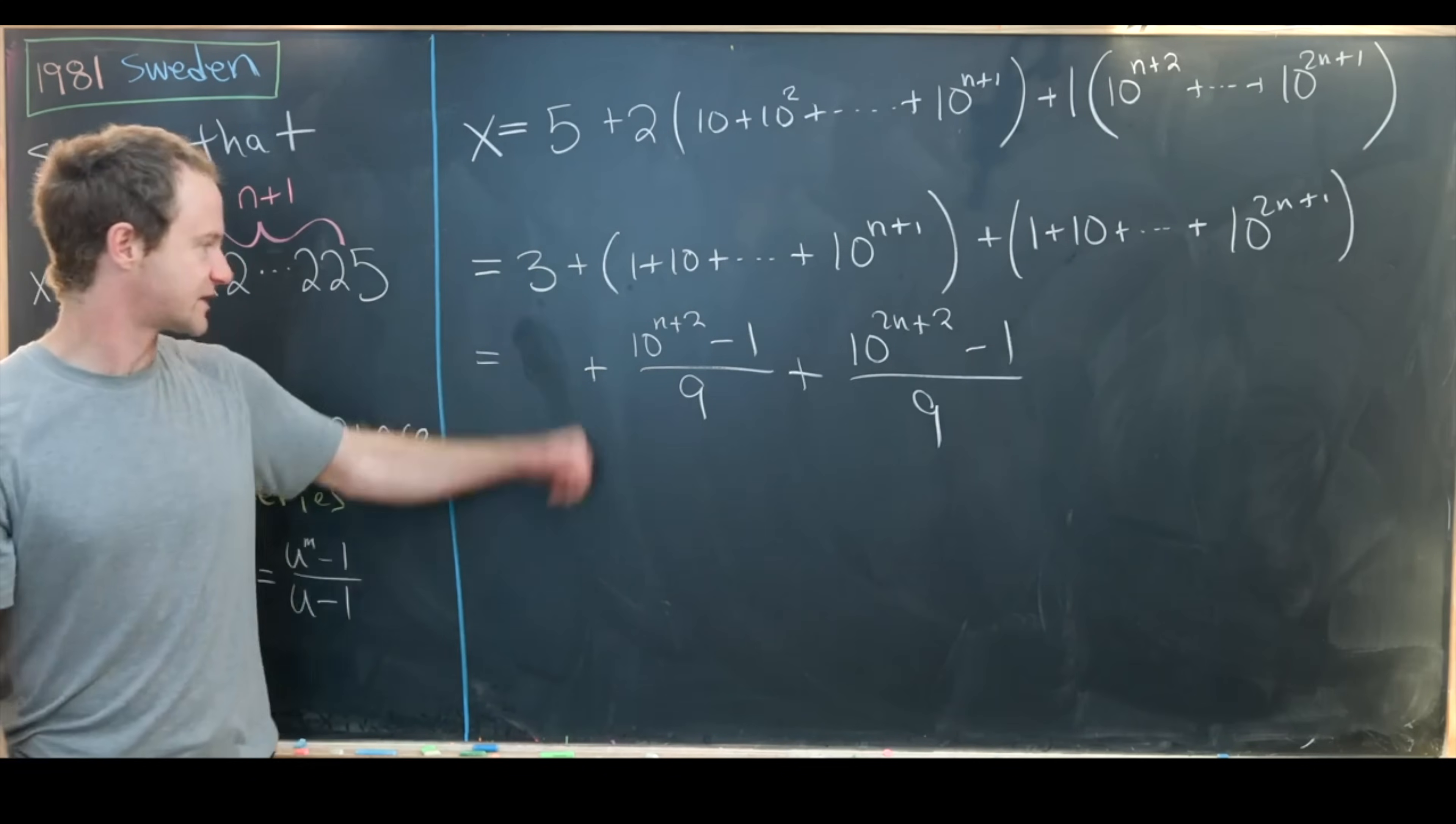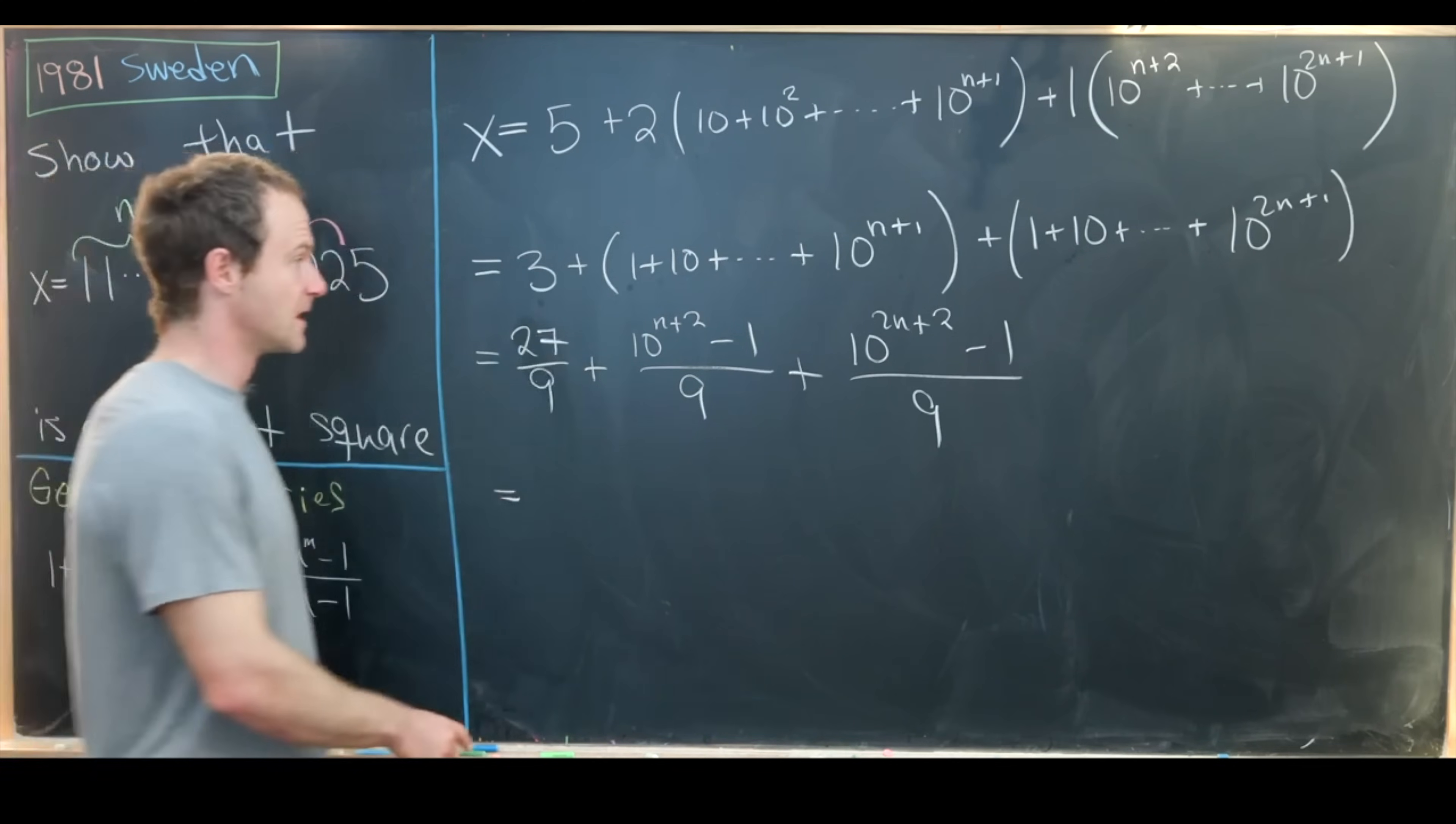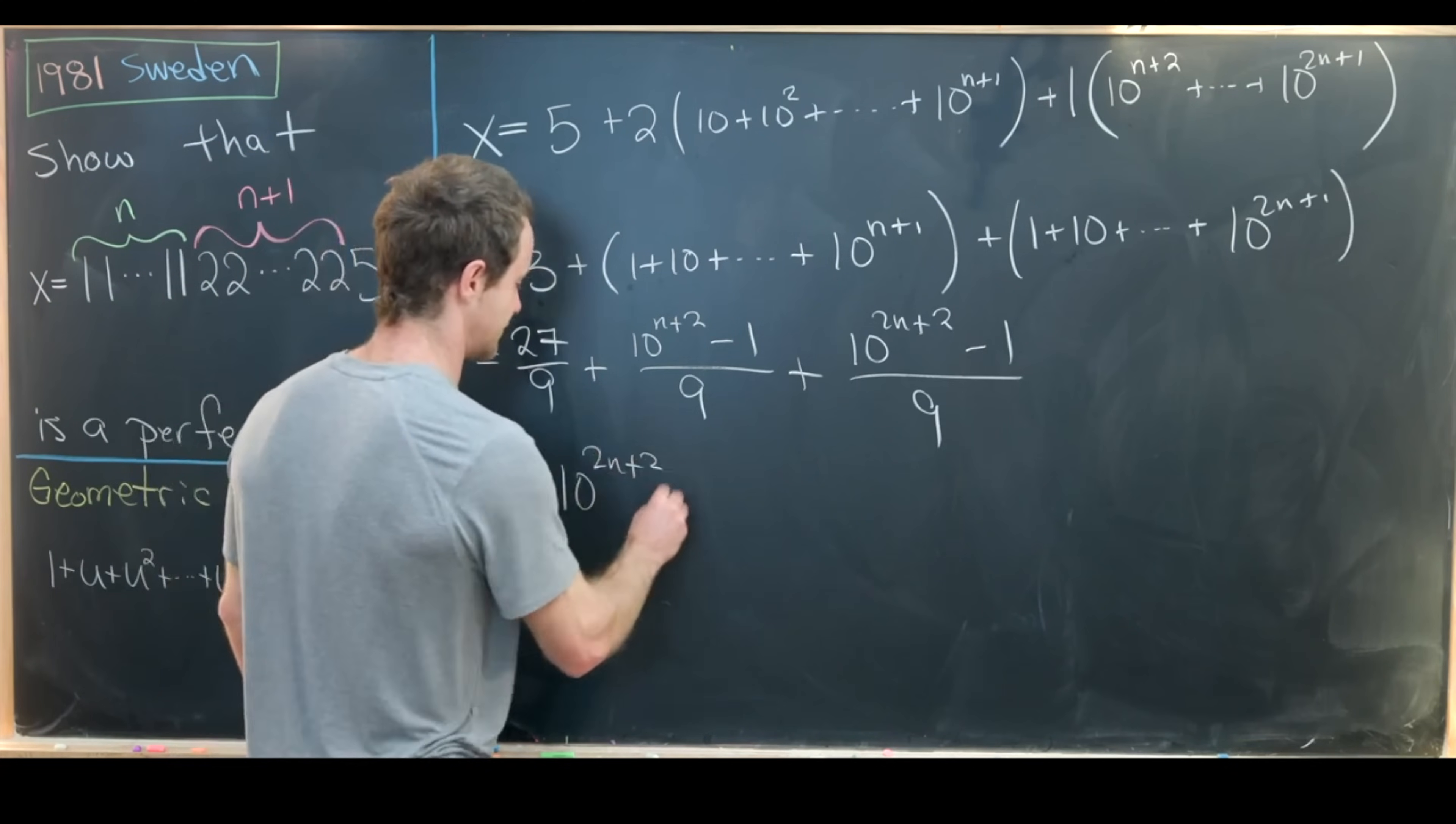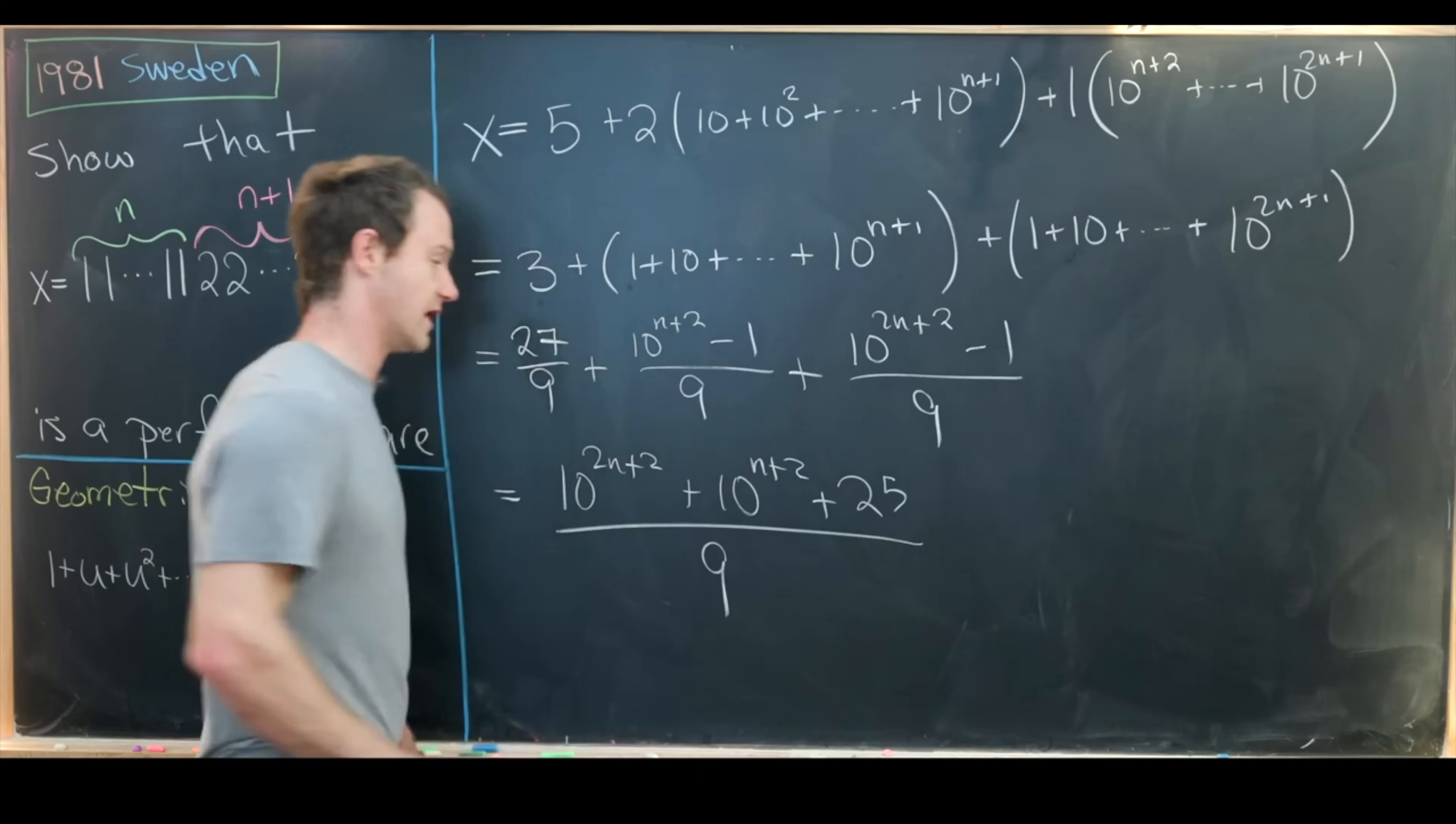So next I can take this 3, rewrite it as 27/9, and then push these two together. So that'll leave us with (10^(2n+2) + 10^(n+2) + 25) all over 9.